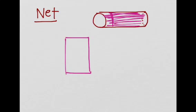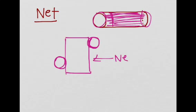Now realize I have two circles. So when I unwrap that, my two circles need to be there. One circle can be here — this will be the bottom circle — and the other circle can be here — this will be the top circle. And I can fold these circles in when I'm wrapping. So this would be the net of a cylinder.